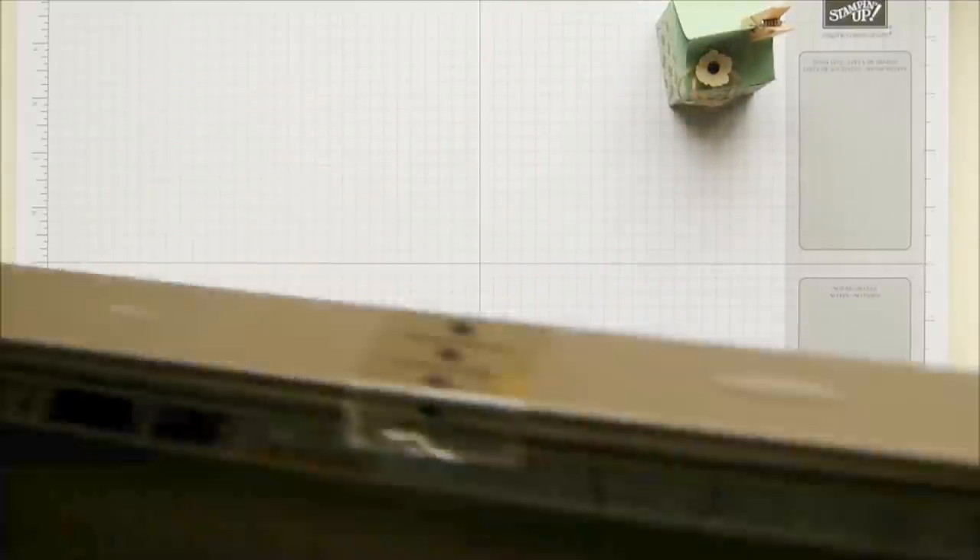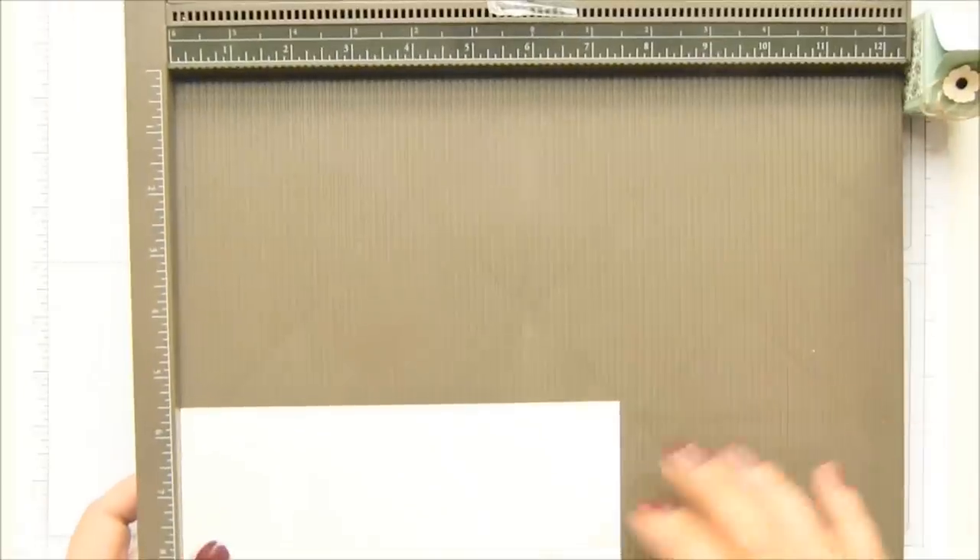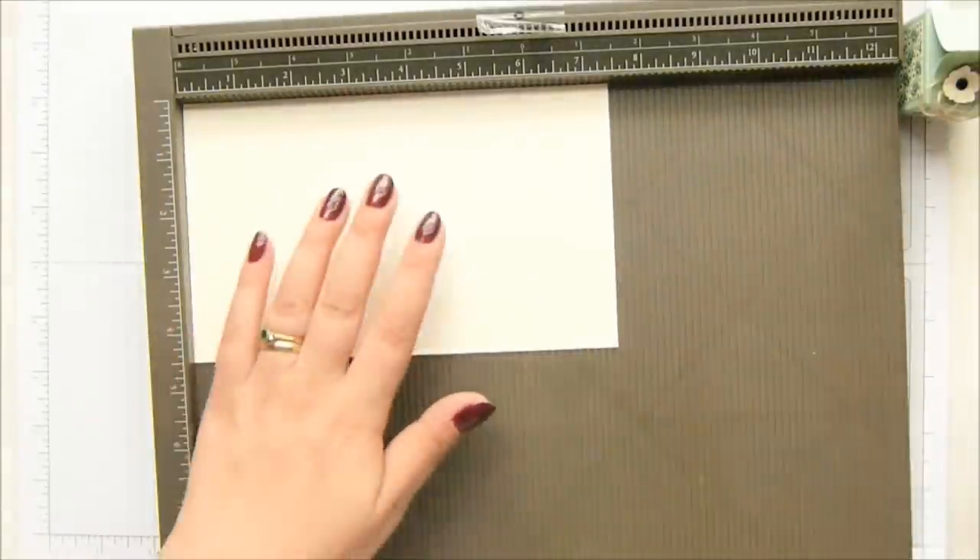So you can get two from a sheet of cardstock because this piece measures four and a half by seven and a half inches, which is 12 by 20 centimeters. So no problem at all getting a couple out of the sheet.